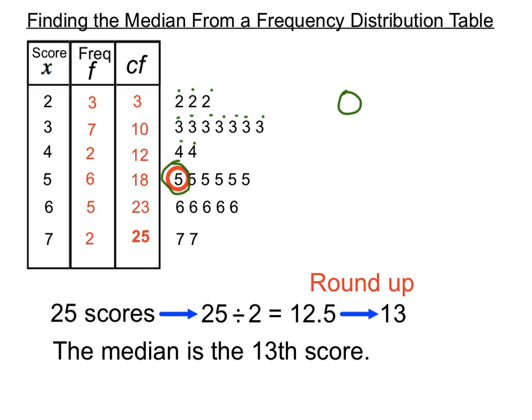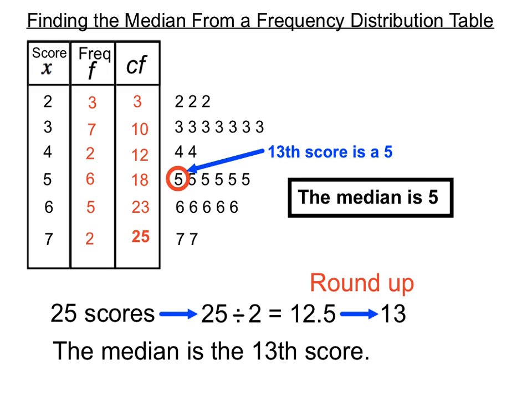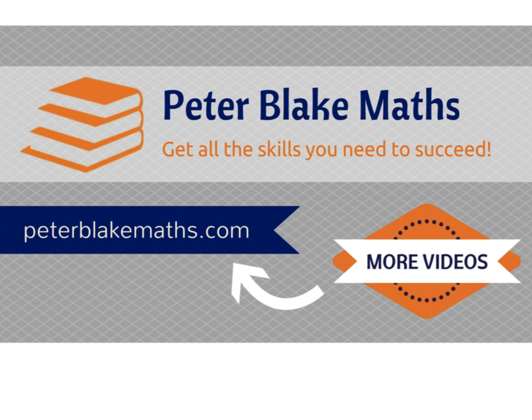In a couple of different ways of explaining it, the median can be determined from a frequency distribution table. In this example, our median is five — that's our thirteenth score. We added a cumulative frequency column and that helped us figure out which score is going to be our median from our frequency distribution table. Thanks for listening — I hope that helps.